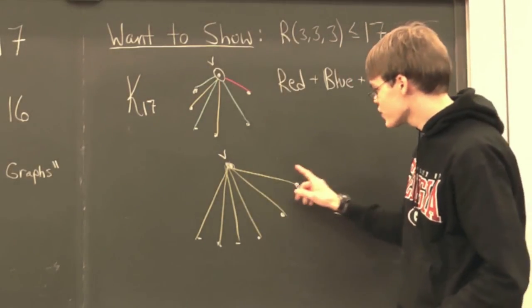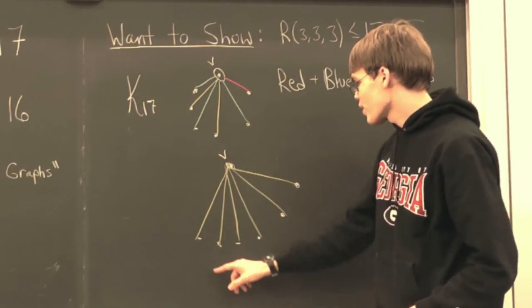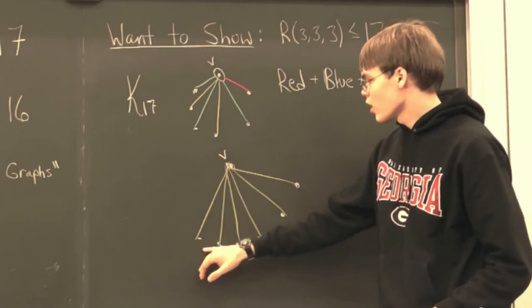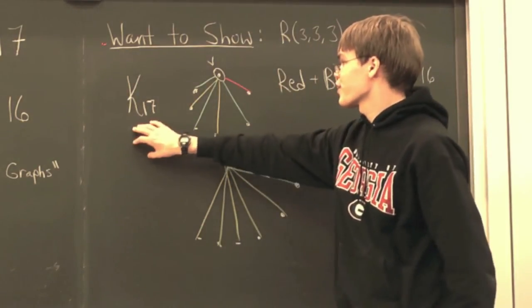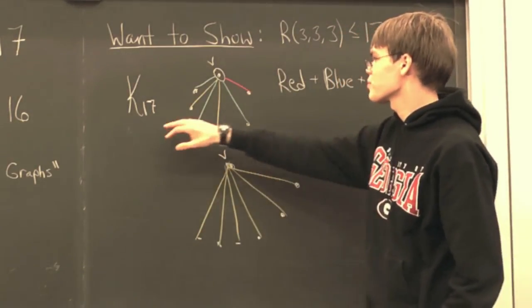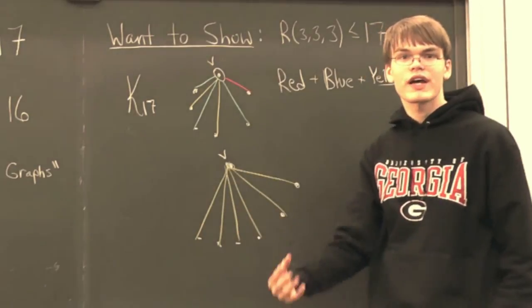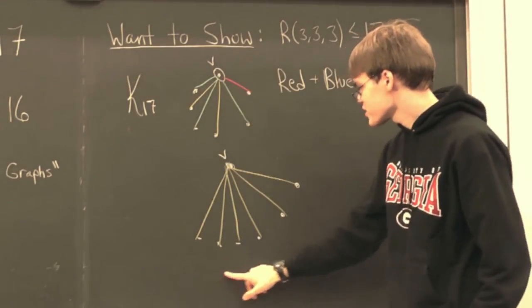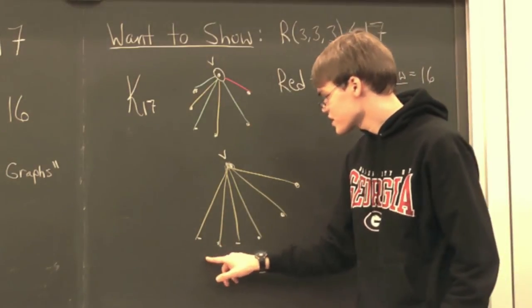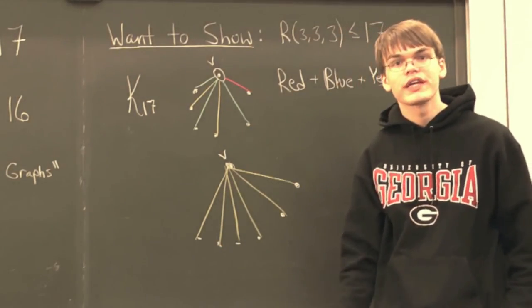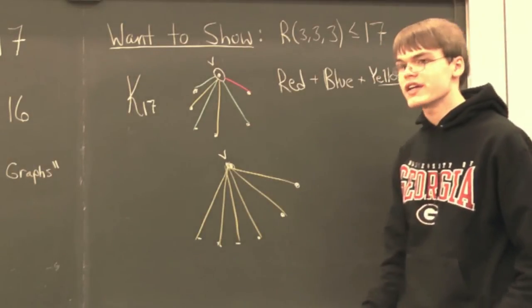Our second case is that we don't have any yellow edges between our six vertices. Now, remember that we're working with a subgraph on K17. So, if we focus on the subgraph between these six vertices, it's going to be complete. And, in this second case, we're going to consider a two-coloring because we assume that we're not using yellow at all.